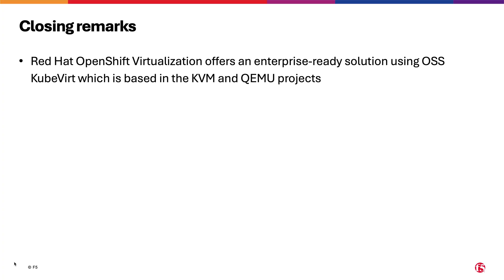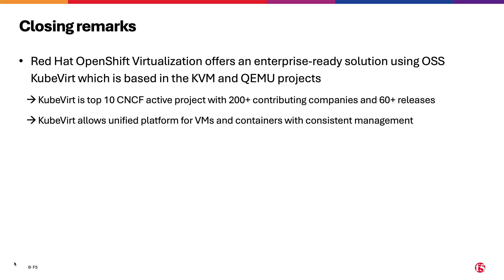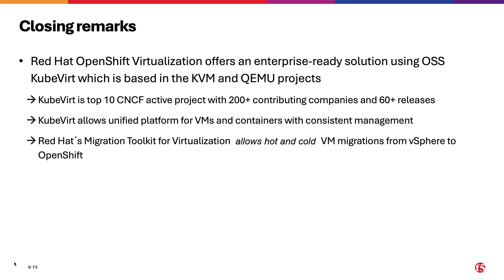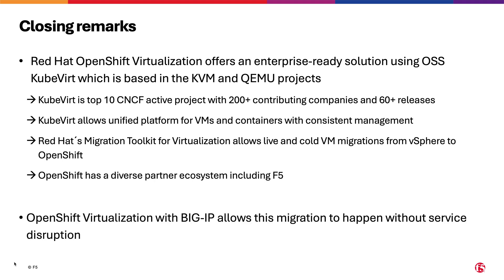Red Hat OpenShift Virtualization offers an enterprise-ready solution using open-source software KubeVirt, which is based on the KVM and QEMU projects. KubeVirt is a top CNCF project. It allows a unified platform for VMs and containers with consistent management, and with the Migration Toolkit for Virtualization, allows hot and cold VM migration from vSphere to OpenShift. OpenShift has a very diverse partner ecosystem, including F5. Overall, OpenShift Virtualization with BigIP allows this migration to happen without service disruption.